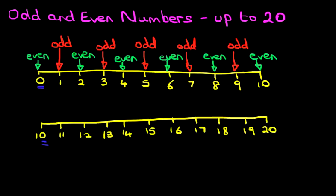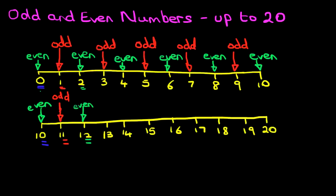Any number ending in 0 is even. Now let's look at the next one, number 11. Number 1 ends with a 1, and number 11 ends with a 1 — if the number ends in 1, no matter what it is, it is an odd number. How about number 12? It ends in 2, and number 12 also ends in 2, so any number ending in 2 is an even number. Number 13 ends in 3, and any number ending in 3 is always an odd number.